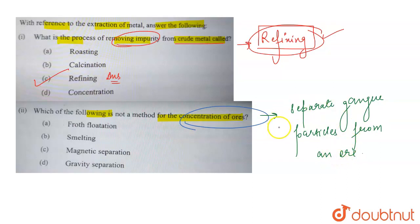Metals can be concentrated from their ores by methods like hydraulic washing, magnetic separation, froth flotation, and leaching. These are some of the methods used for the concentration of ores.